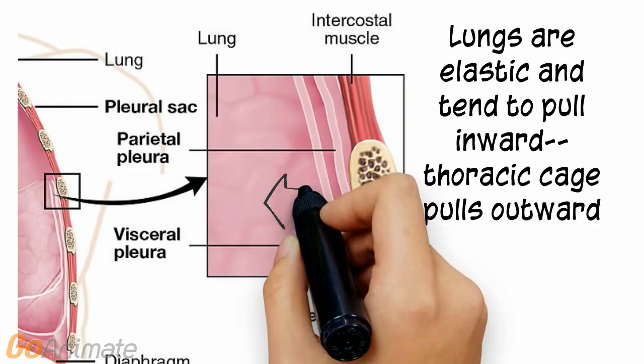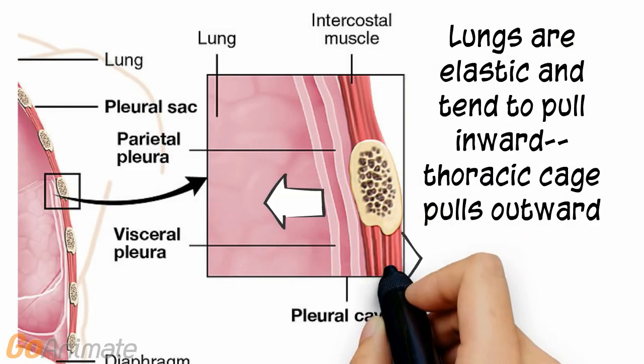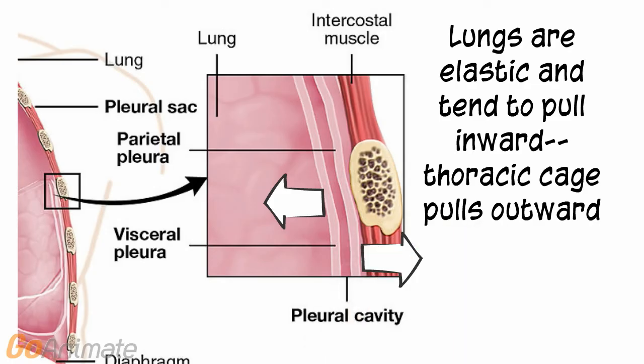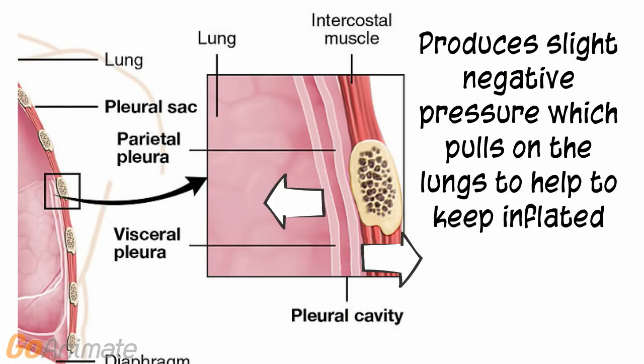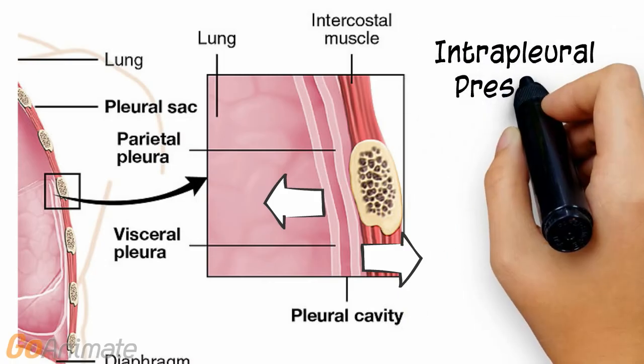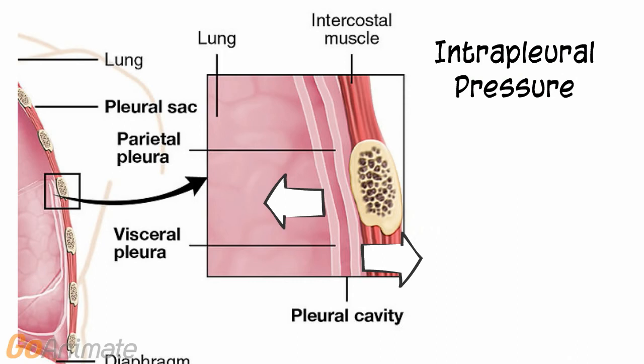Also, the inward pressure of the elastic lungs opposes the outward pressure of the thoracic cage, which causes a slight negative pressure that also helps to keep the lungs inflated. This pressure is called intrapleural pressure.